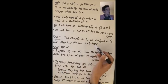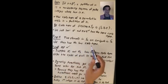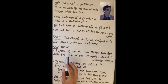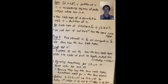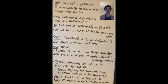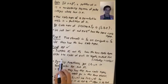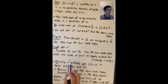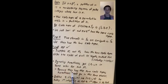Now let's prove that same cycle type implies conjugacy. Suppose σ₁ and σ₂ have the same cycle type. Write each as a product of disjoint cycles, shortest first, including the 1-cycles. Ignoring parentheses, each listing gives the integers 1 through n in some order. Because they have the same cycle type, the parentheses go in the same places.